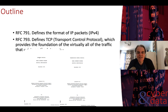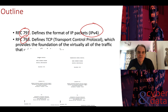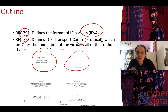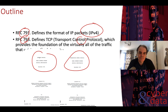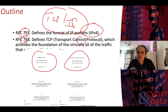One of the key standards that developed the internet was RFC 719, which defines IPv4, and RFC 793, which defines the TCP protocol. These two requests for comments started to define how we could deliver data over the internet using IPv4 addresses. TCP was brought in to allow data to be split into segments and then reassembled at a destination. TCP/IP has been one of the core parts of building the internet.